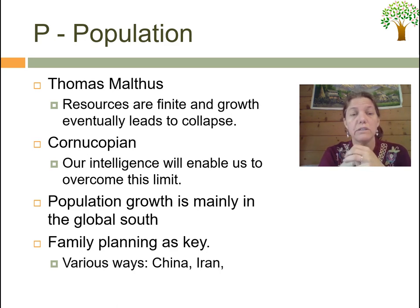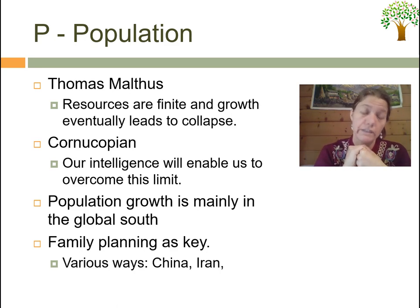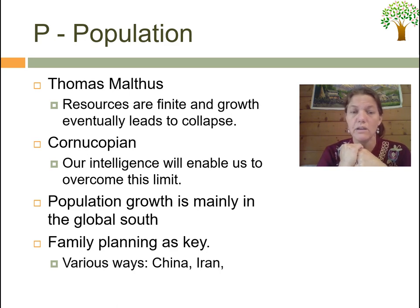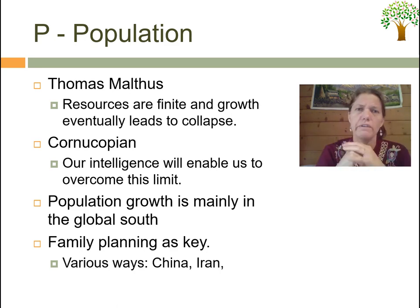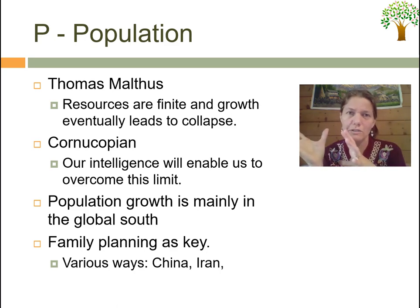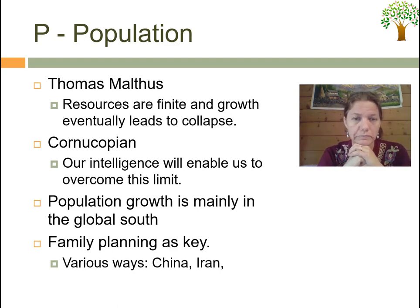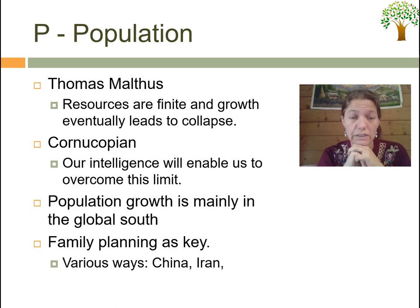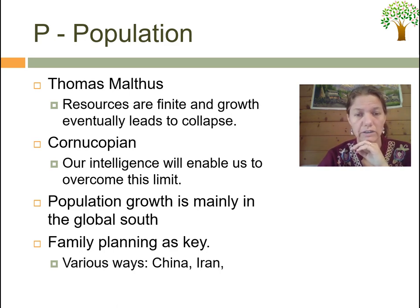Then there is the cornucopian idea, which acknowledges finite resources but argues that human intelligence — individually and collectively — will enable us to overcome this limit, either by not reducing consumption or by extending limits through technology. Malthusians are the pessimists; cornucopians are the optimists. Population growth is currently happening mainly in the global south, and family planning is key. John C. Ayers discusses examples from China and Iran in his book.